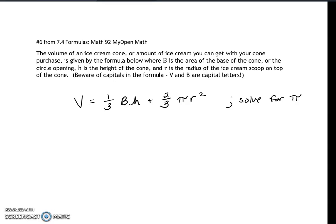H is the height of the cone, and R is the radius of the ice cream scoop on top of the cone. Make sure you realize they're case-sensitive as well, so V and B you want to keep those as capitals and the others as smalls.